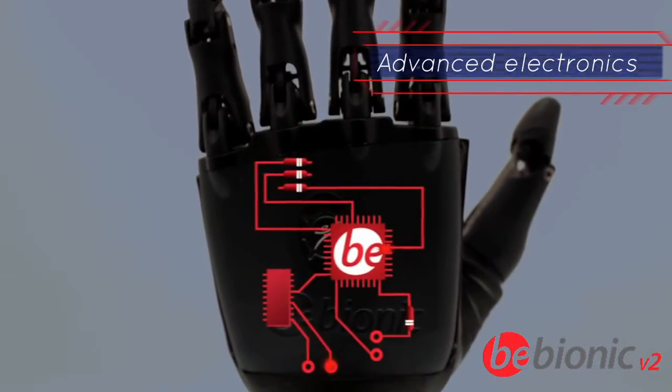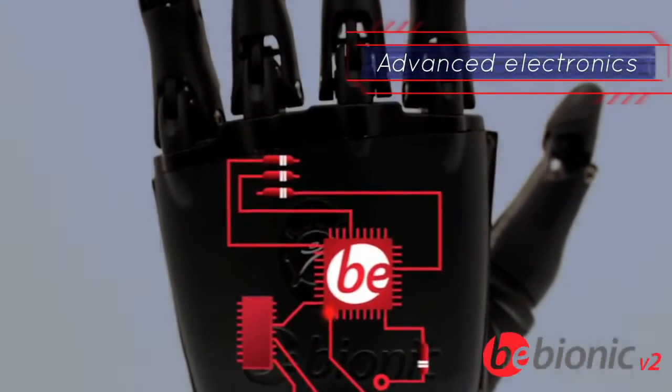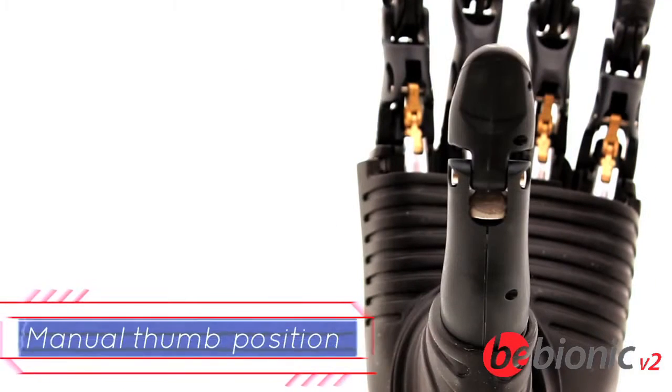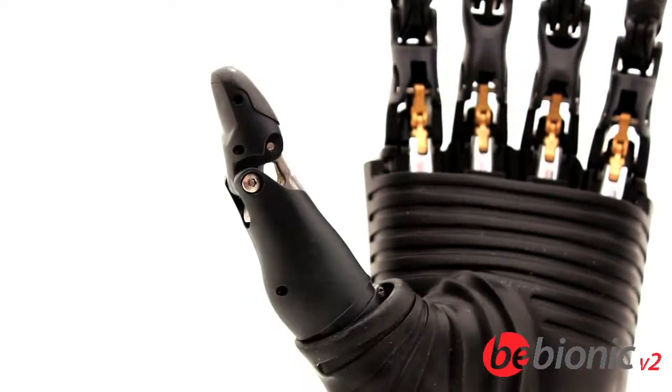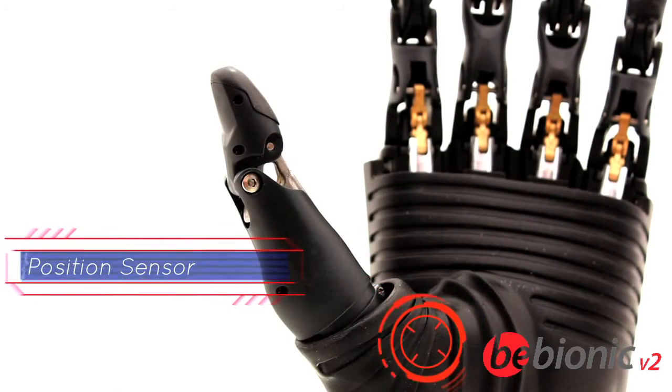Advanced electronics provide fine control. The thumb has two positions, manually placed by the user with an inbuilt sensor detecting the position.